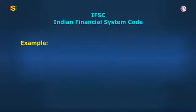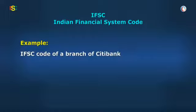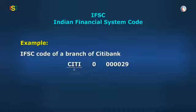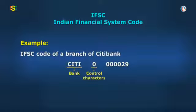For example, the IFSC code of a branch of Citibank is CITI0000029. In this case, the first four characters denote the bank name. The fifth character is standard and marked as 0 as a control character. The last six characters are usually digits and represent a particular bank branch.